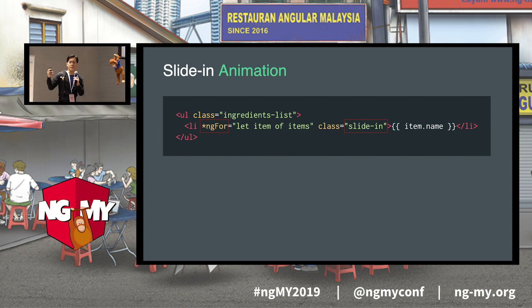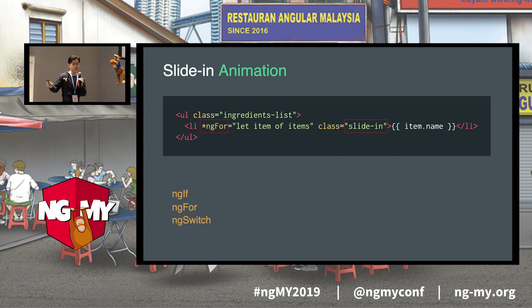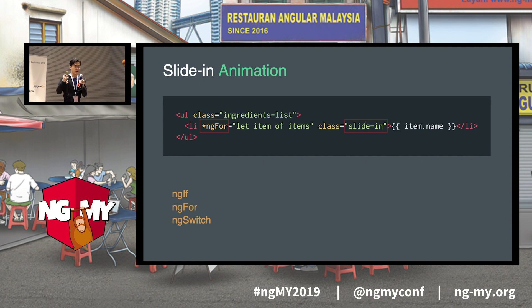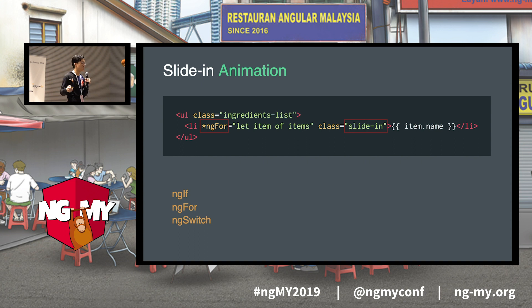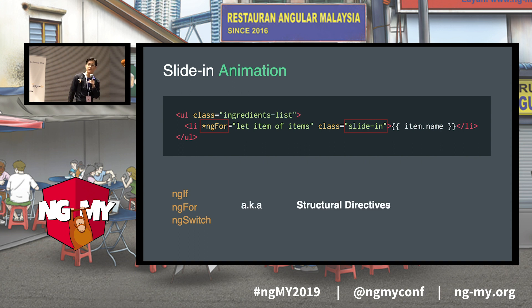But how do we add this class onto our template? One good way is to simply attach it as a class. The reason this works so well is because when we're using structural directives — NgIf, NgFor, and NgSwitch — these directives dictate when our HTML elements are rendered onto the DOM. Whenever they're rendered for the first time, it triggers the animation once, making it look like you've animated it into the page.